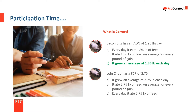Second question: Loin Chop has a feed conversion ratio of 2.75. Does that mean: A, it grew an average of 2.75 pounds per day? B, it ate 2.75 pounds of feed on average for every pound of gain? Or C, every day it ate 2.75 pounds of feed? A feed conversion ratio of 2.75 means that it ate 2.75 pounds of feed on average for every pound of gain. So the correct answer is B.